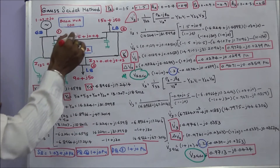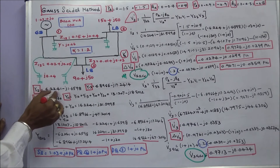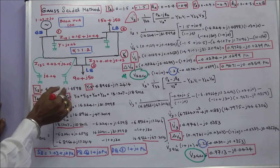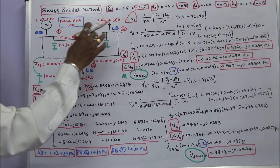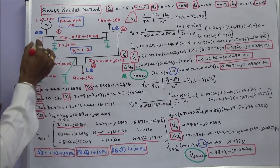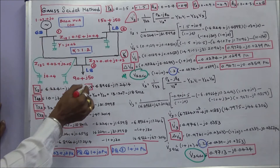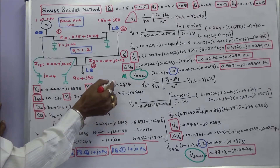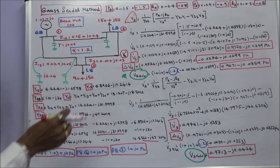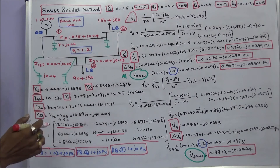The line series admittances are: Y12 = 6.2241 minus j1.6598, Y13 = 6.8966 minus j17.2414, and Y23 series admittance is 10 minus j30.